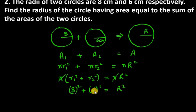So 8² is 64, 6² is 36, and R² equals 100. Taking square root on both sides, you will get R as 10 centimeters.